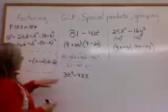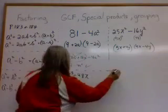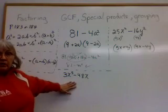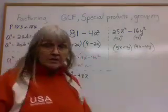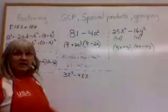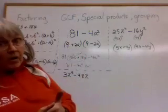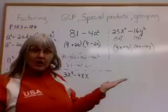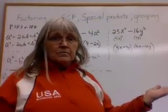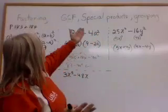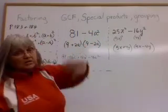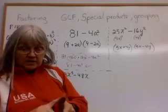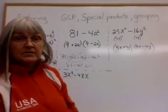One more example. Two parts — could it be a difference of two squares? There's a minus sign, but both parts are not perfect squares: 3 is not a perfect square. So let's go back to factoring special products — greatest common factor. Maybe there's a greatest common factor for this one; let's look and see.